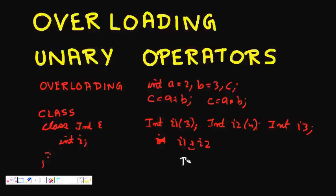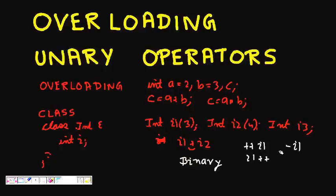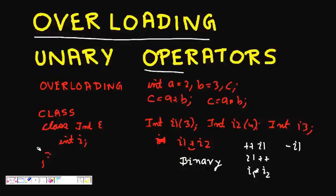We will study unary operators first, and the binary one later. Our need is that we want operators like prefix plus plus i1, postfix i1 plus plus, and minus of i1 — all these should work for the class object. If I do i1 into i2 it should multiply, so these kinds of operations should work on the class object — that is our aim.